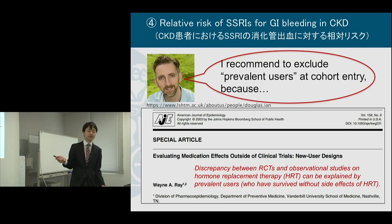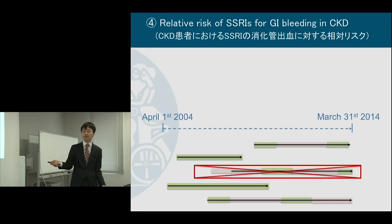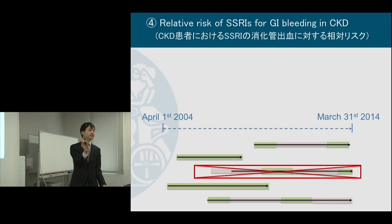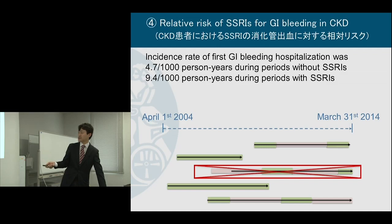In this example, a patient was already using antidepressants because they hadn't experienced GI bleeding before. So even if followed up later, they're unlikely to have GI bleeding, which could bias the association between SSRI and GI bleeding. Following Ian's advice, I decided to exclude such patients and conducted an incident user study design.